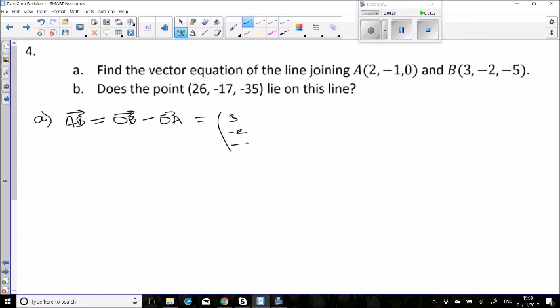So we calculate (3,-2,-5) minus (2,-1,0). You could do that the other way round, you can do B to A, you'll still get a suitable direction vector. If we do this the other way round, all the signs would just be the other way round: negative 1, 1, 5.